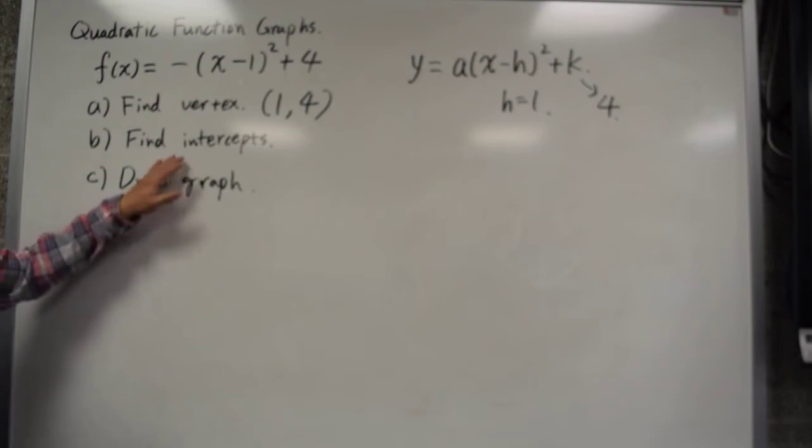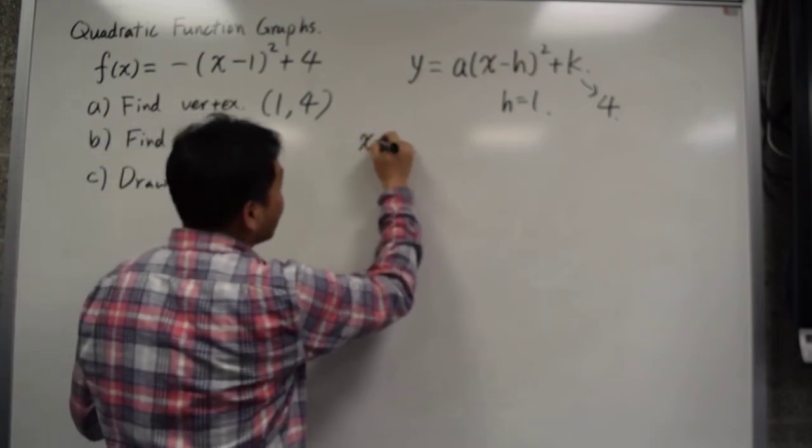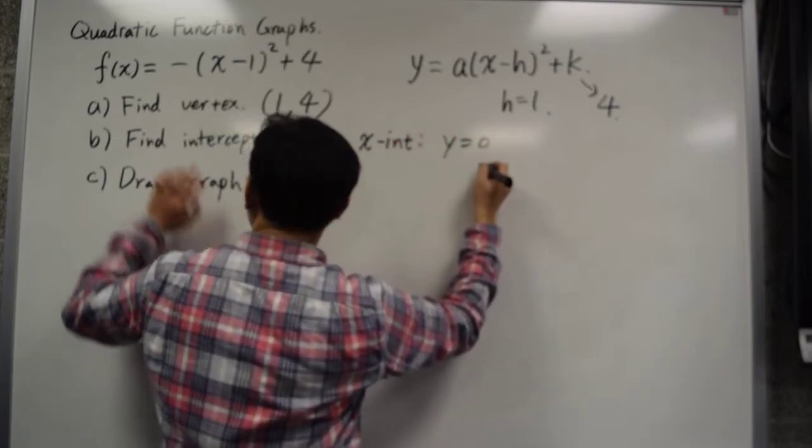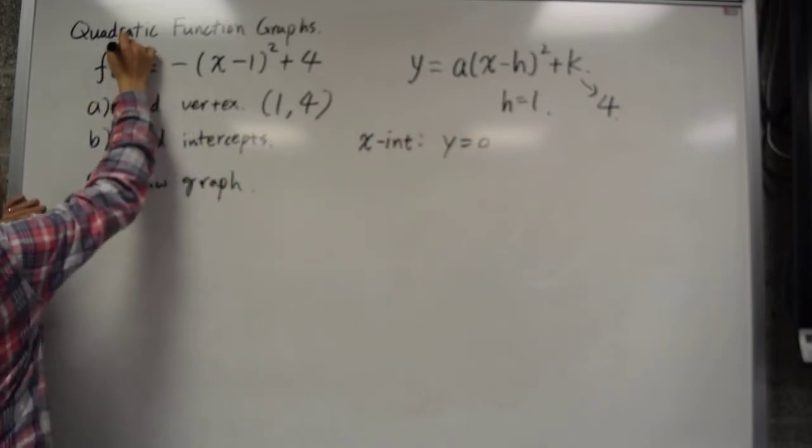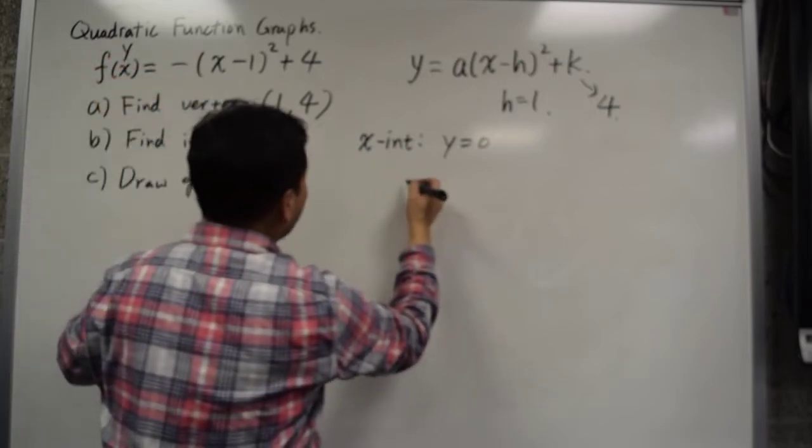What about the intercepts? To get the x-intercept, you need to set y at 0. So we put, well there's no y here, but you put y equals to this. So if you put y at 0,